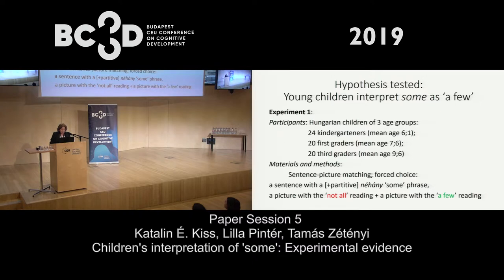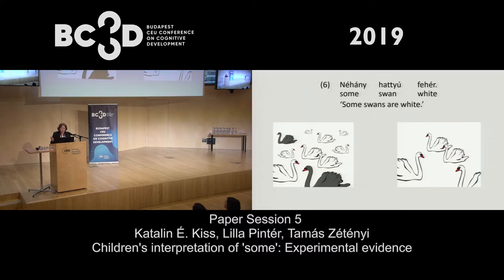We tested three age groups of Hungarian children. The first experiment involved sentence-picture matching. They heard a sentence with 'some' — in fact the Hungarian equivalent of 'some' — and there was a picture showing the partitive reading (the 'not all' reading) and another picture showing the non-partitive reading (the 'a few' reading), and they had to decide which picture the sentence is about. For example: 'some swans are white' — the left-hand side picture shows the 'not all' reading, and the right-hand side picture shows the 'a few' reading.